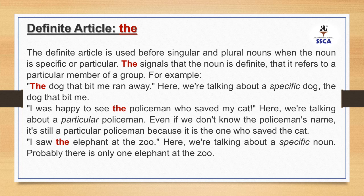We have already studied about indefinite articles A and AN, so now we will study about the definite article. Unlike indefinite articles, the definite article is used before singular and plural nouns when the noun is specific or particular. 'The' signals that the noun is definite — that it refers to a particular member of a group.